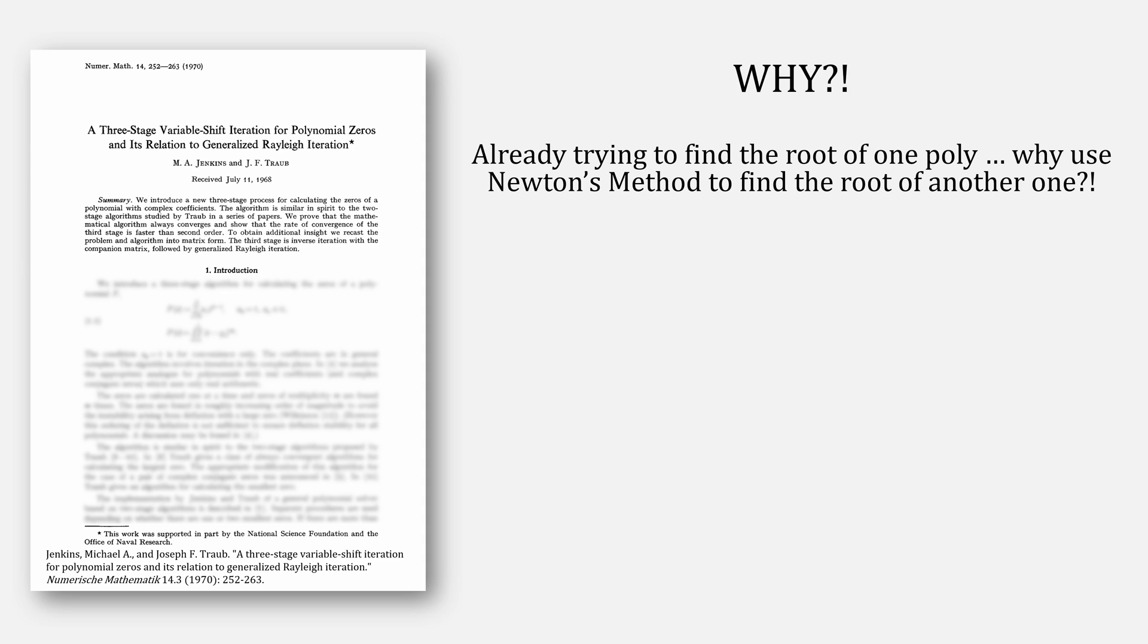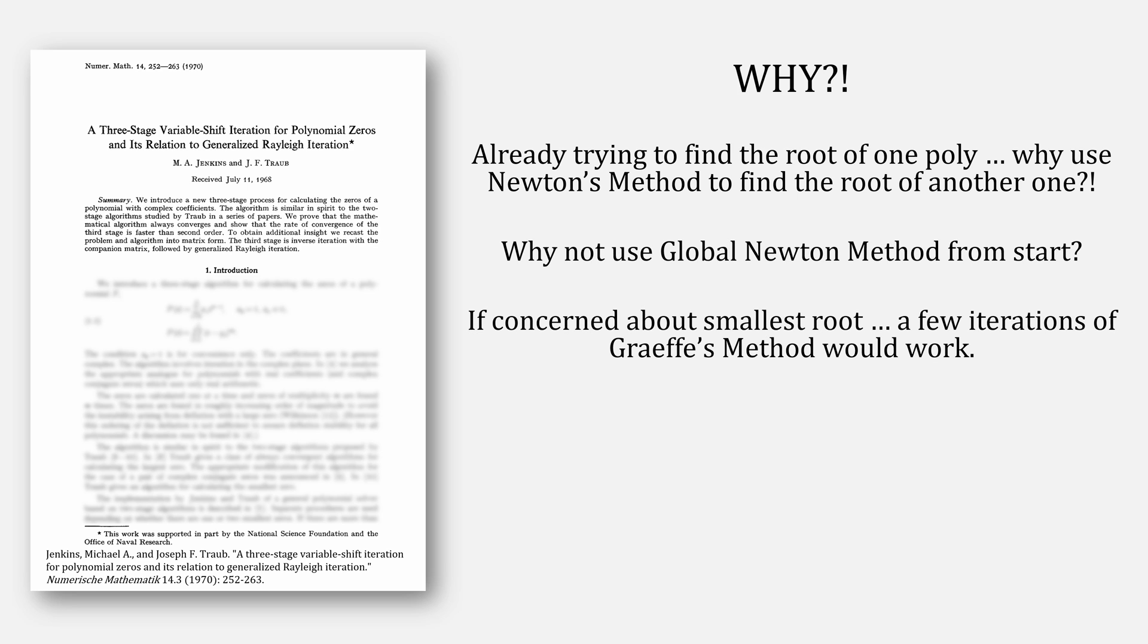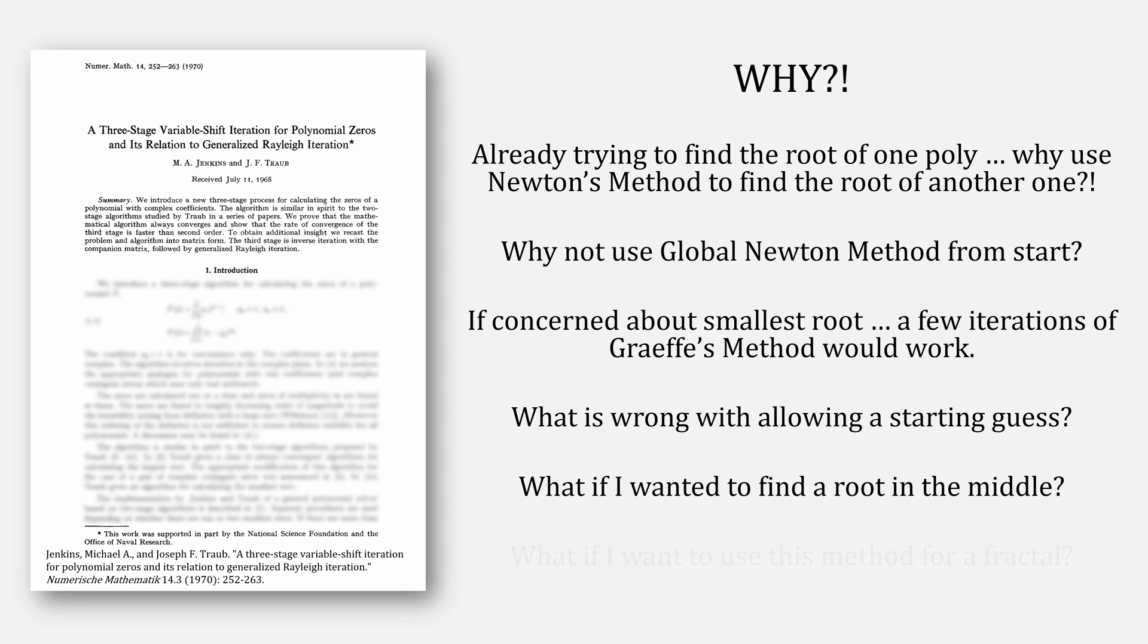Which leads to my question of why? We're already trying to find the root of one polynomial. Why use Newton's method to find the root of another one? Why not just start with global Newton's method in that case? If we are really concerned about the smallest root, a few iterations of Graves' method would work. What's wrong with just allowing a starting guess? What if I actually wanted to find a root somewhere in the middle? What if I want to use this method to make fractals?